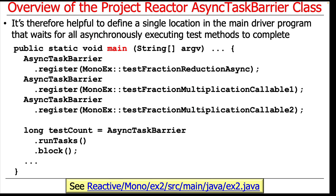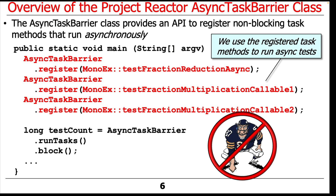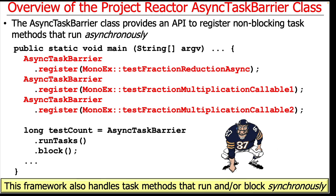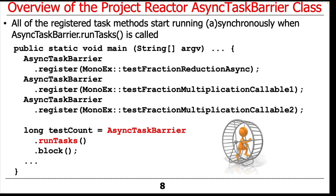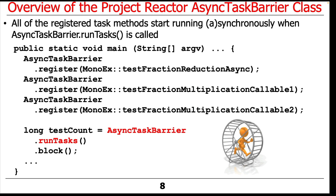Let's say we have an example. Here's a main entry point into a test program. What we're going to end up doing is registering all of the methods we want to test — methods that run asynchronously — with the Async Task Barrier. So we register all these things, and then they will start to run once we trigger them. You can also do synchronous methods, but that's kind of boring, so we're not going to focus on them. Once you have registered the methods you care about, you can tell the Async Task Barrier to run all of these test methods, run these tasks, and then they all go off and do their thing in the background.